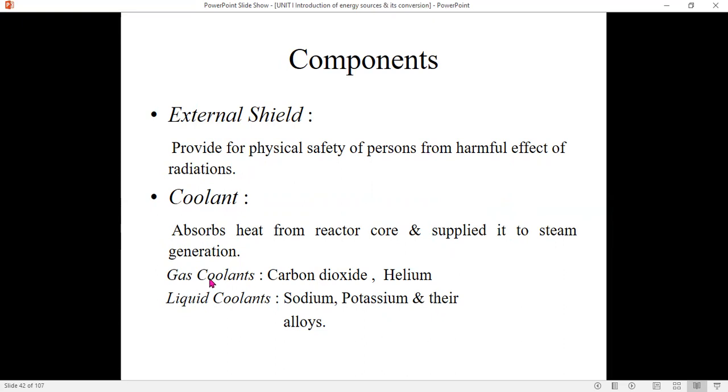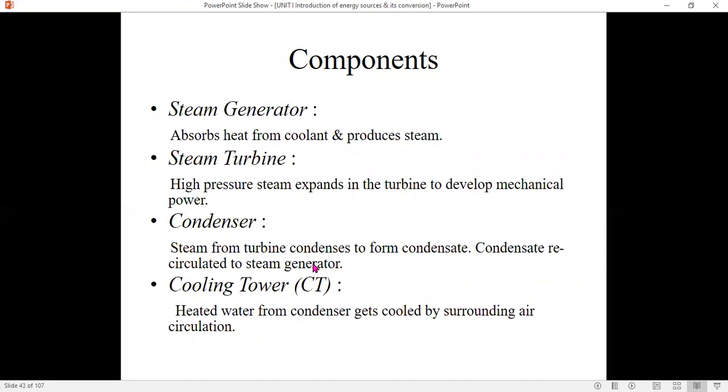We can have gas coolants and liquid coolants. We require a steam generator to absorb heat from the coolant and produce the steam. Steam turbine is required to expand the steam, which can produce mechanical work. The condenser converts the vapor into water. We also require a cooling tower. Filtered water from the condenser gets cooled by surrounding air circulation.